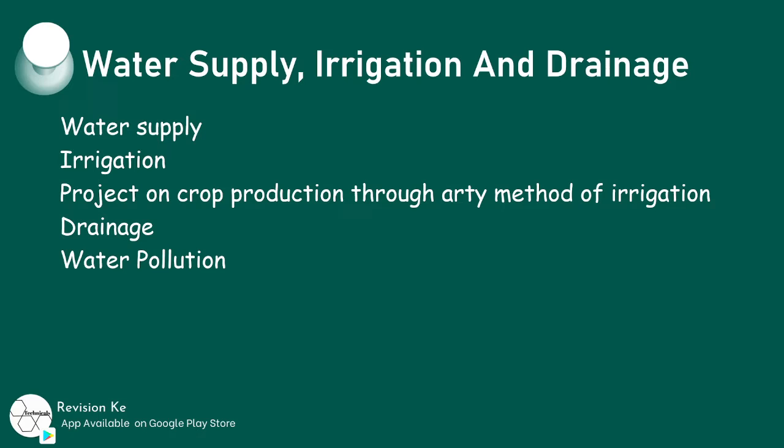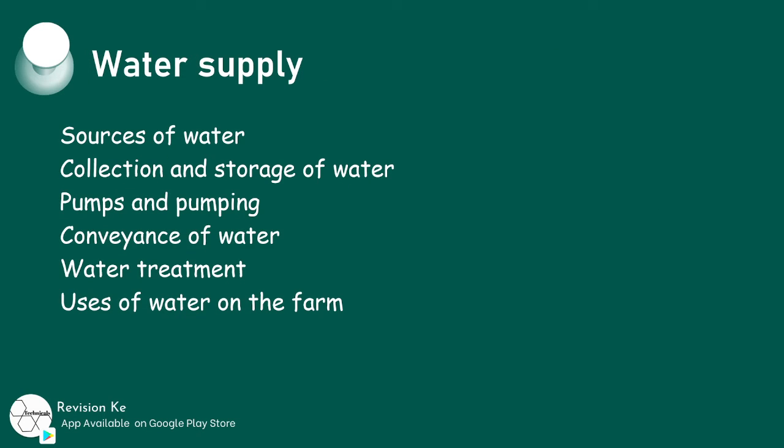You'll notice that the topic is water supply, irrigation and drainage. Under water supply, we're going to look at some of these subtopics: sources of water, collection and storage, pumps and pumping, conveyance of water, water treatment, and finally uses of water for the farm.